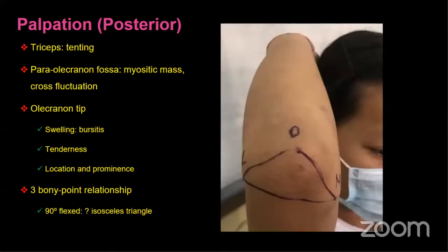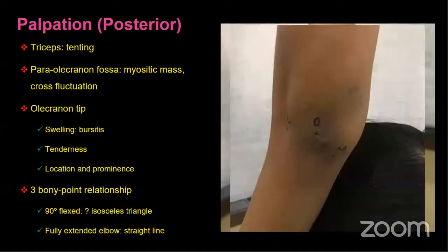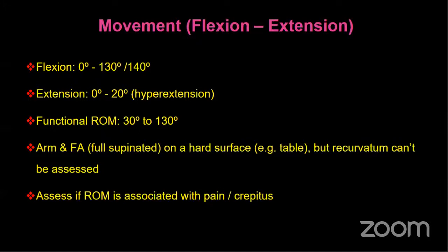Movement of the elbow is very important. Normal flexion is 0 to 130 degrees and hyperextension 0 to 20 degrees. The functional arc of motion is considered 30 to 130 degrees. While assessing flexion and extension, classically the arm and forearm are kept on a hard surface like a table — however, this means you cannot assess recurvatum. Whenever assessing range of motion, note whether it is painful or painless.